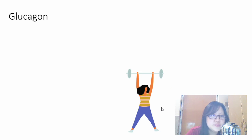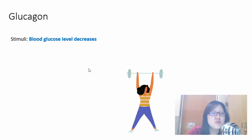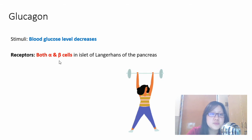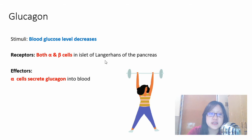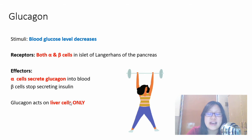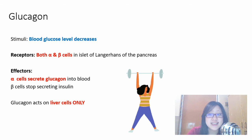Now, what happens when glucagon is secreted? The stimulus is that blood glucose levels decrease — for example, during exercise. The receptors involved are again both alpha and beta cells in the islets of Langerhans. However, it's the alpha cells that secrete glucagon into the blood, while beta cells are inhibited and stop secreting insulin. Unlike insulin, glucagon acts on liver cells only. Before we go through the process, it's important to have revised the signaling cascade from Chapter 4.